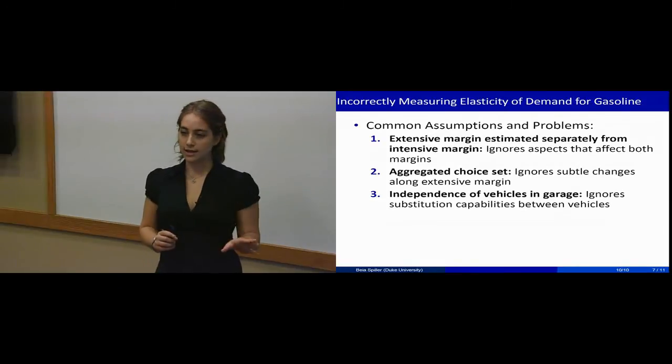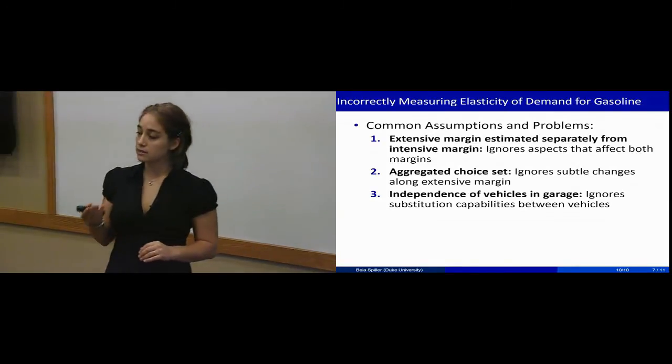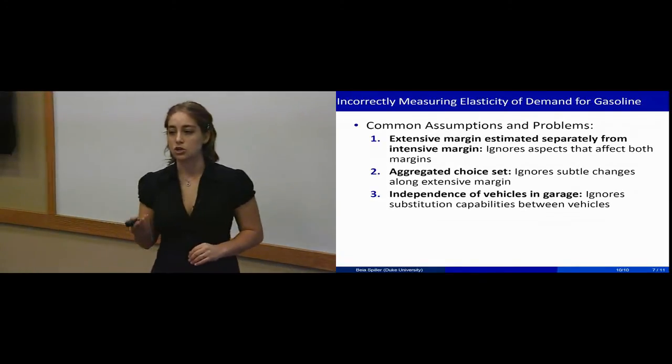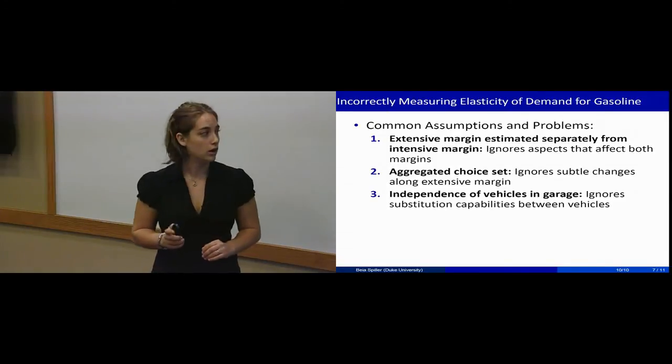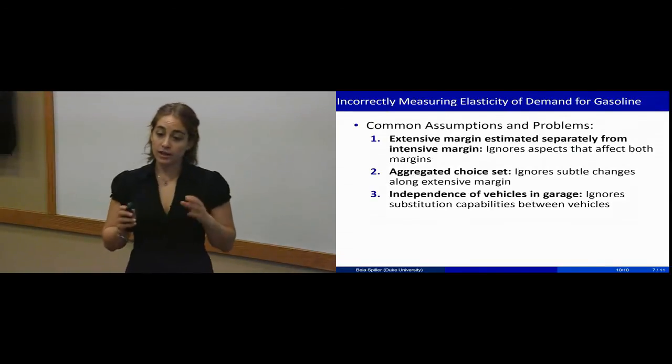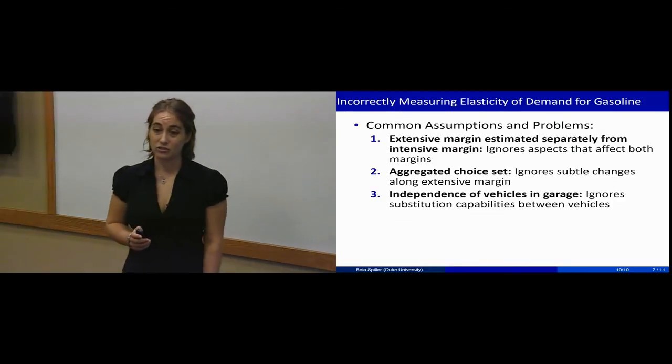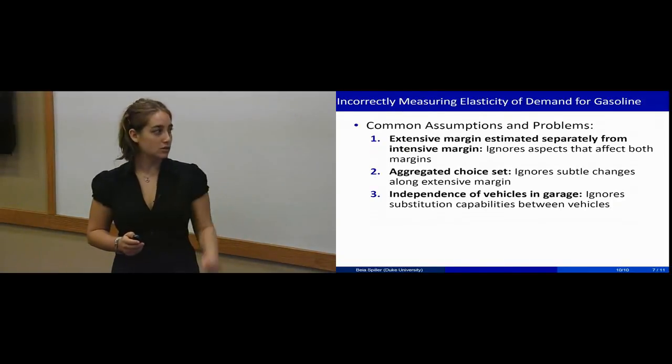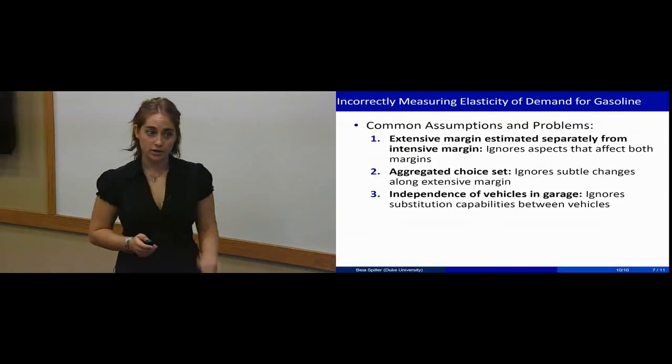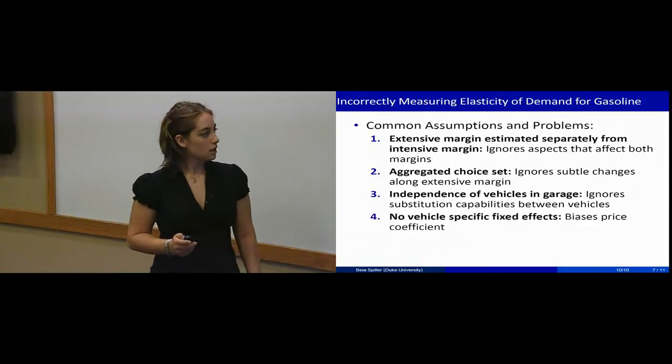If a household has an SUV and a car, when gasoline prices increase, we would expect to see a shift from the SUV to the car. But if these margins are estimated separately, we would be missing out on this extra movement. My method allows me to not assume independence.